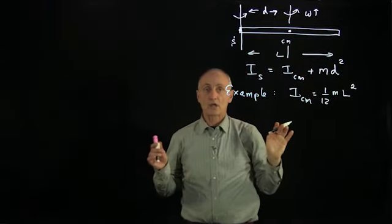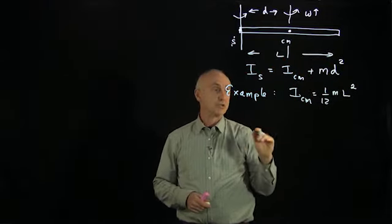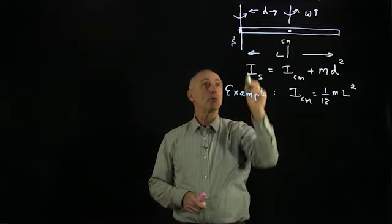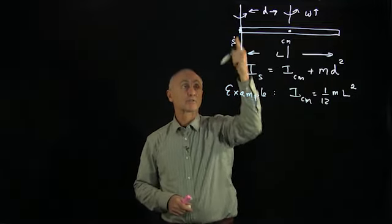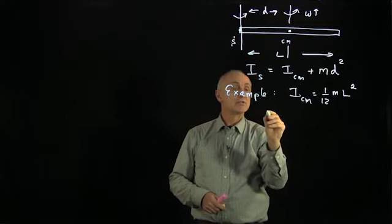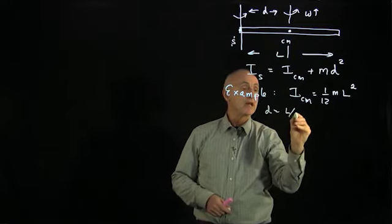And let's assume it's a uniform object. And we'll calculate a moment of inertia through an axis through the end. And so in this case, d is equal to L over 2.